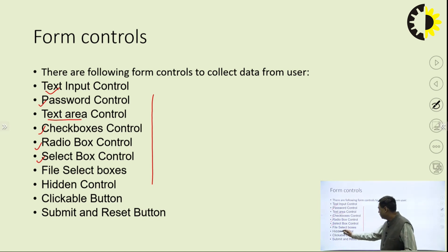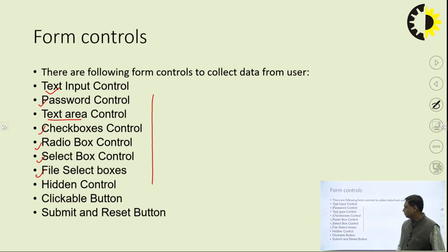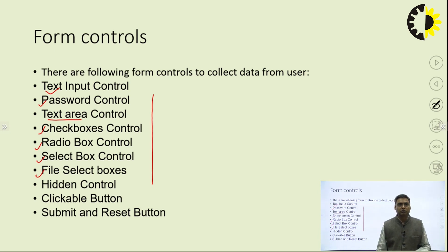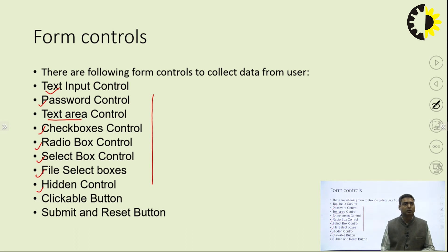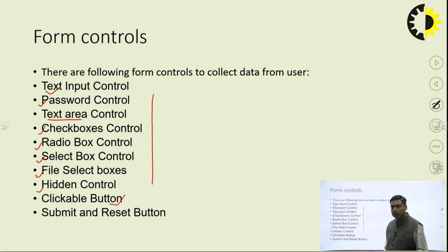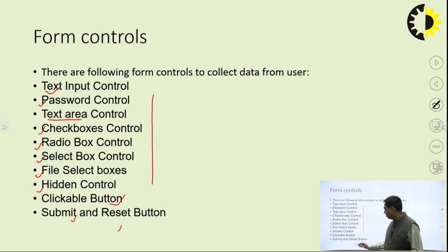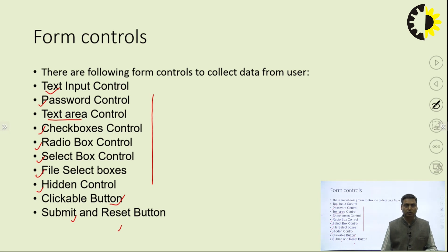We can upload a file with the help of a file select box. Some information you want to hide on the web page so that the user is not able to see it — that information can be given with the help of the hidden control element. We can also create buttons in the HTML form, and finally we have submit and reset buttons. These are important elements for collecting information from the user.